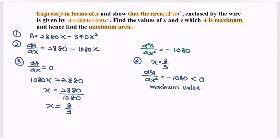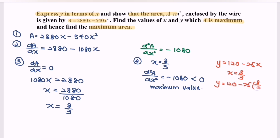The question asks for the value of x and y. Using y equals 120 minus 25x, and substituting x equals 8/3: y equals 120 minus 25 multiplied by 8/3. The value of y equals 160/3, or equivalently 53 and one third.